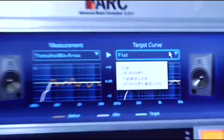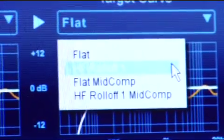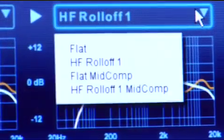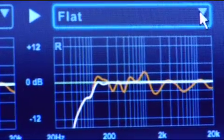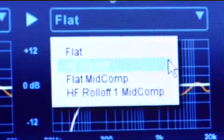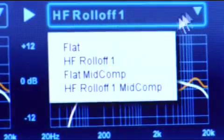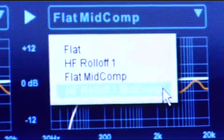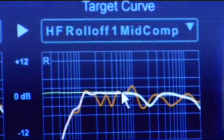Now over here we have the target curve where you can change your target curve. The target curve is the green line here. So you have four different curves. You've got flat which is just straight across. You have a high frequency roll off. You have a flat mid compensation. And you have a high frequency roll off with mid compensation.